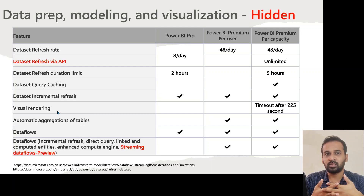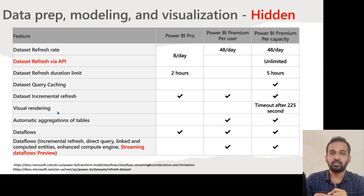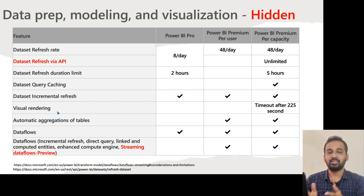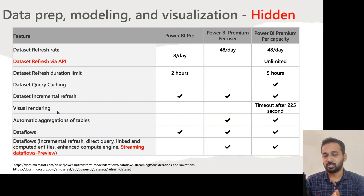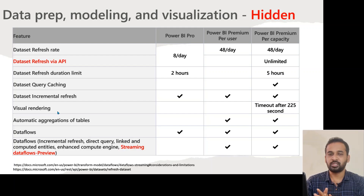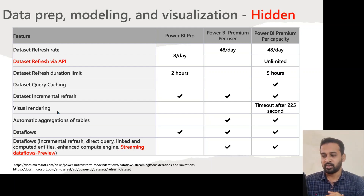In Gen 2, there are no settings available to change the timeout, unlike Gen 1 where you had capacity settings options. In Gen 2, it is automatically managed by Power BI itself. So when developing reports, make sure to consider these limitations. Automatic aggregation of tables is also a recently introduced feature, available only for Power BI Premium Per User and Premium Per Capacity, not for Pro.